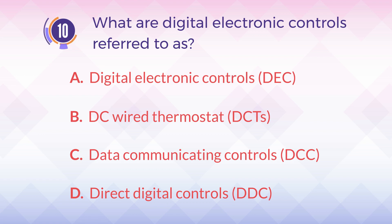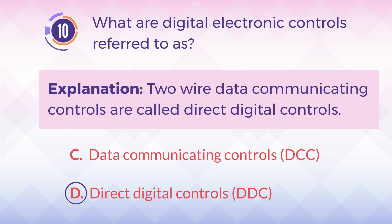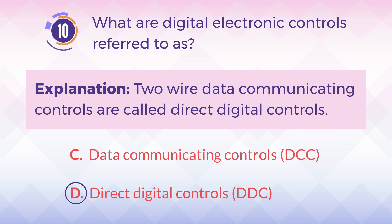The answer is D. Direct digital controls, DDC. Explanation: Two-wire data communicating controls are called direct digital controls.